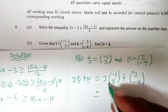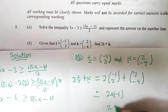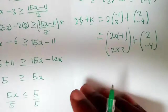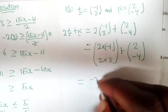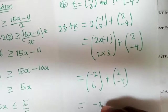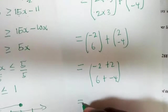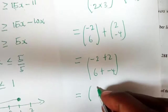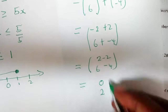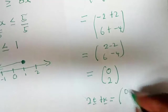Since 2 is a scalar, we multiply: 2 times negative 1 gives negative 2, and 2 times 3 gives 6, while k remains 2, negative 4. Adding the components: negative 2 plus 2 equals 0, and 6 plus negative 4 equals 2. Therefore the vector 2t plus k equals 0, 2.